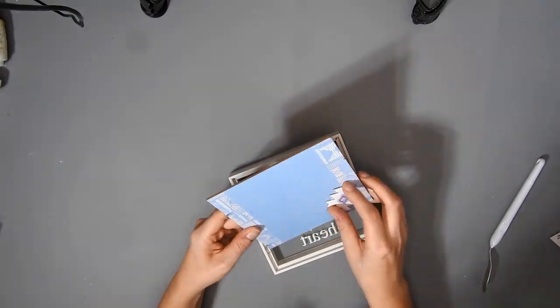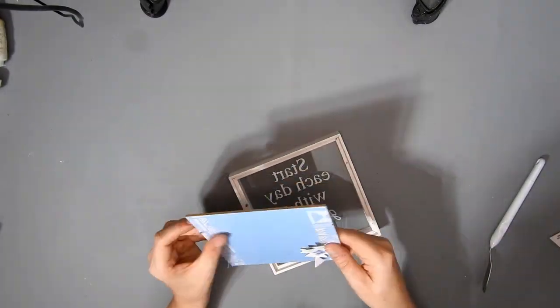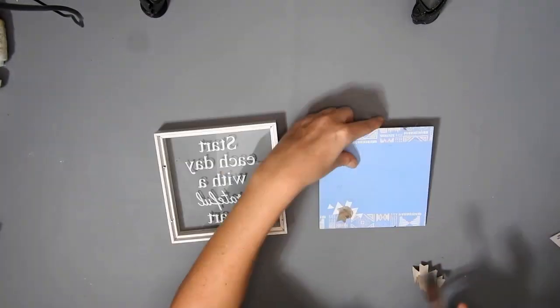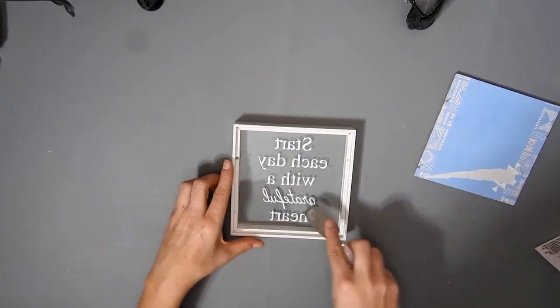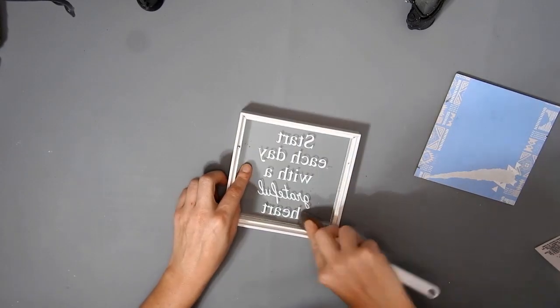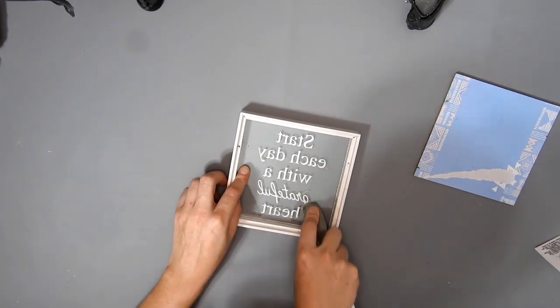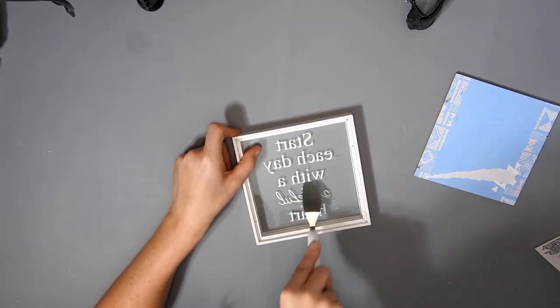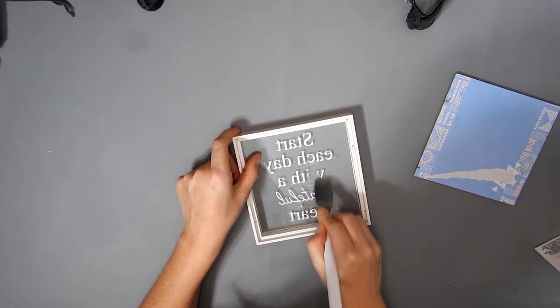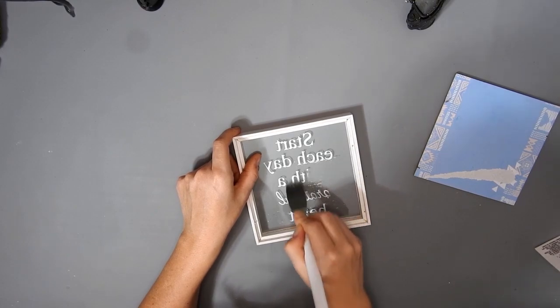I'm using a tool from Dollar Tree to take out the back and take off this little cardboard thing, and then I'm using the same tool to scrape off these letters from inside the glass.